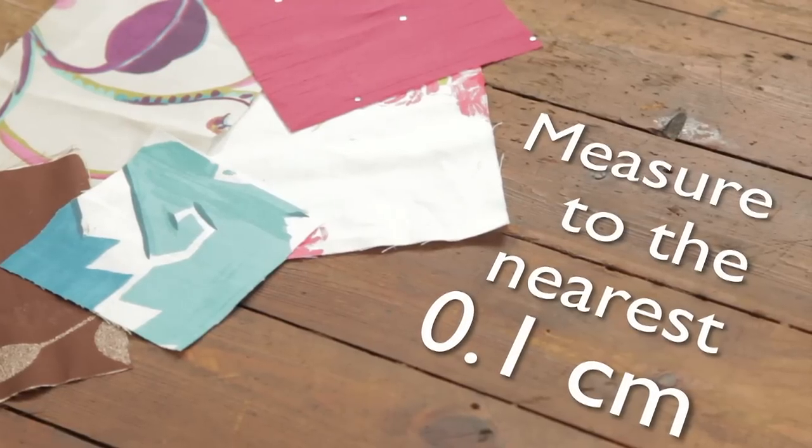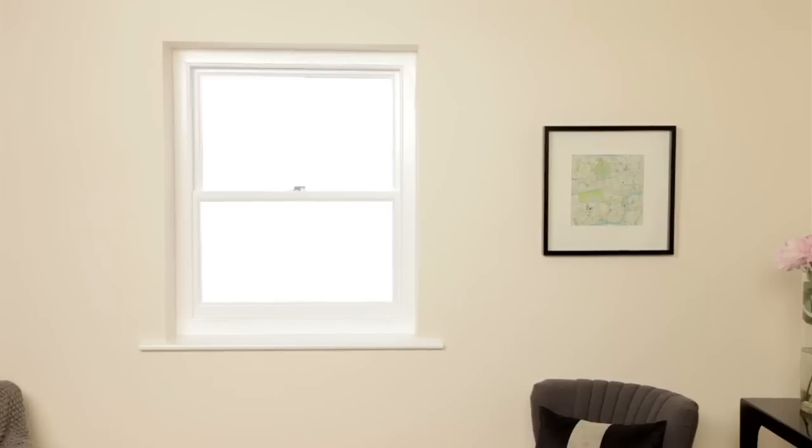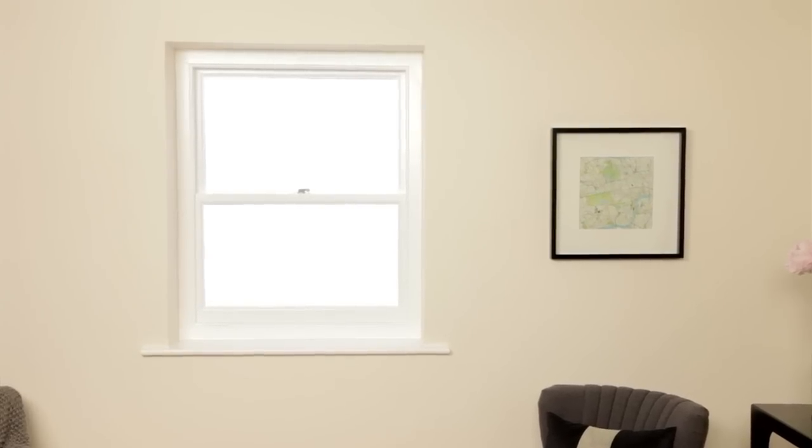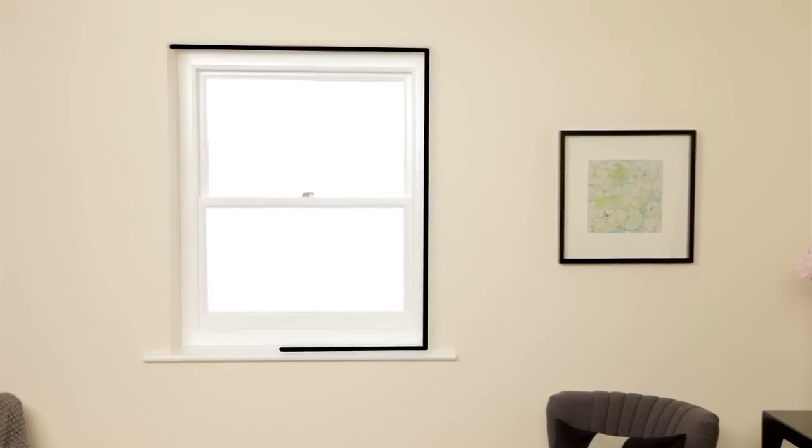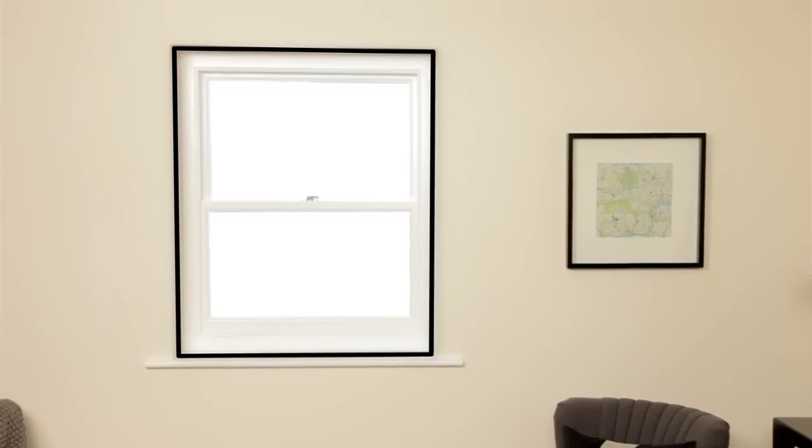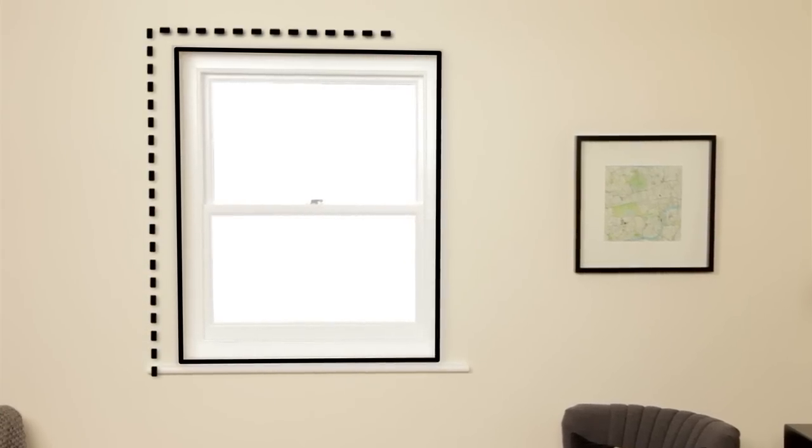Now you're ready to begin. First you'll need to work out whether you want your vertical blinds to hang inside the recess or cover it completely like this.